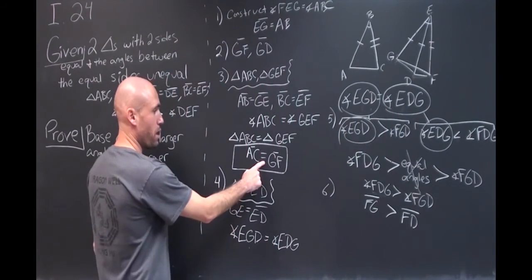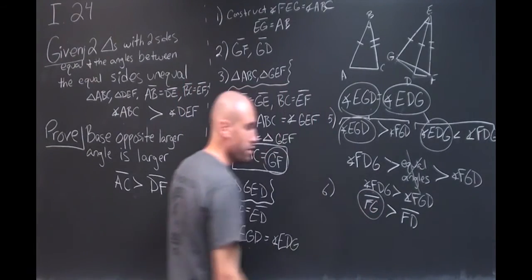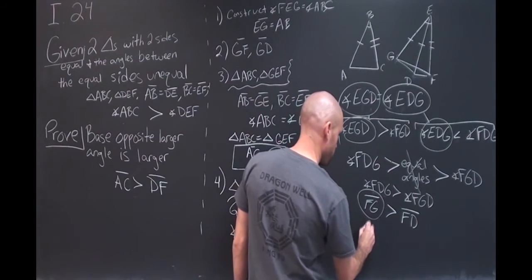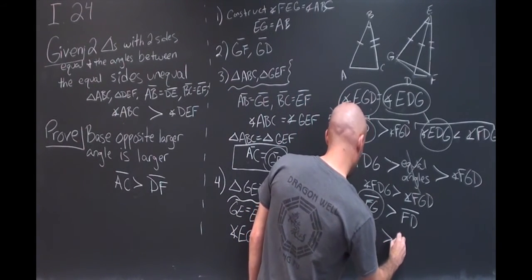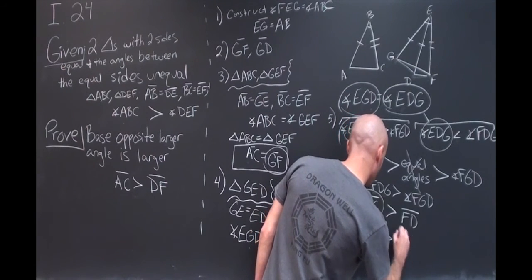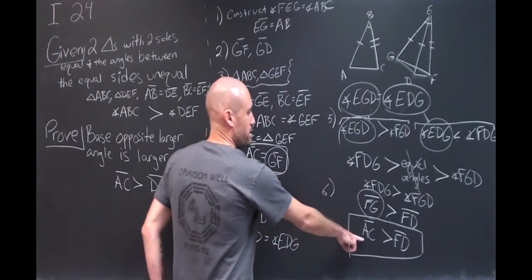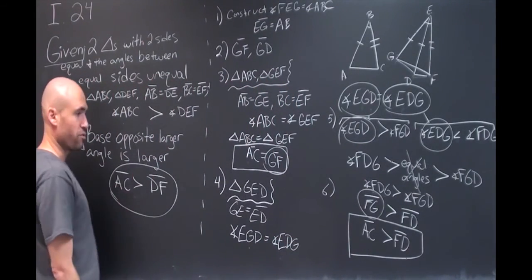And then if we go back to our boxed off area here, notice we have an FG and FG. So all we're going to do is substitute AC in over here. So we get AC is greater than FD, which is what we were looking for for our proof.